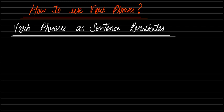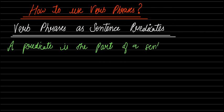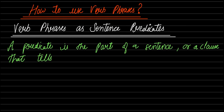A predicate is the part of a sentence or a clause — one portion of the sentence or clause.